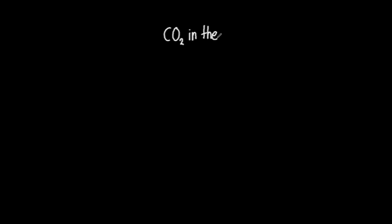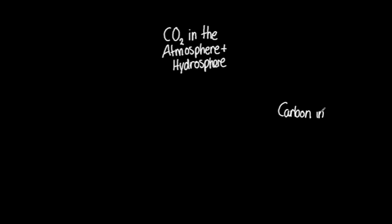A diagram of the carbon cycle can be produced by first indicating the main reservoirs of carbon, or where they can be found, and then showing the way in which carbon is transferred between the reservoirs.